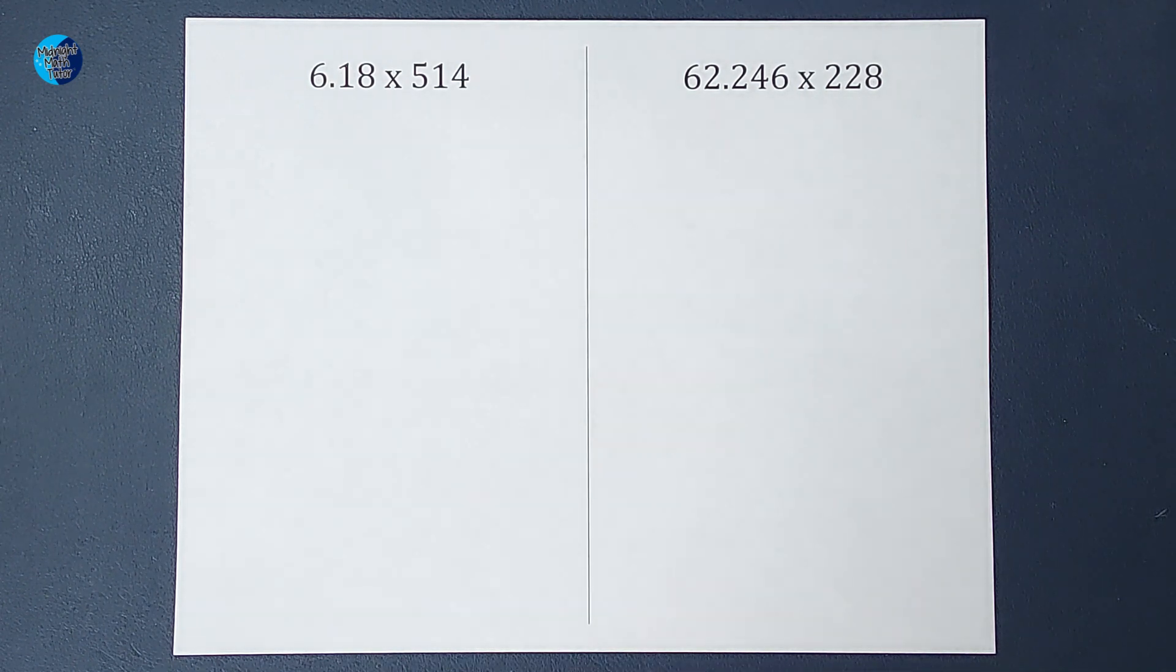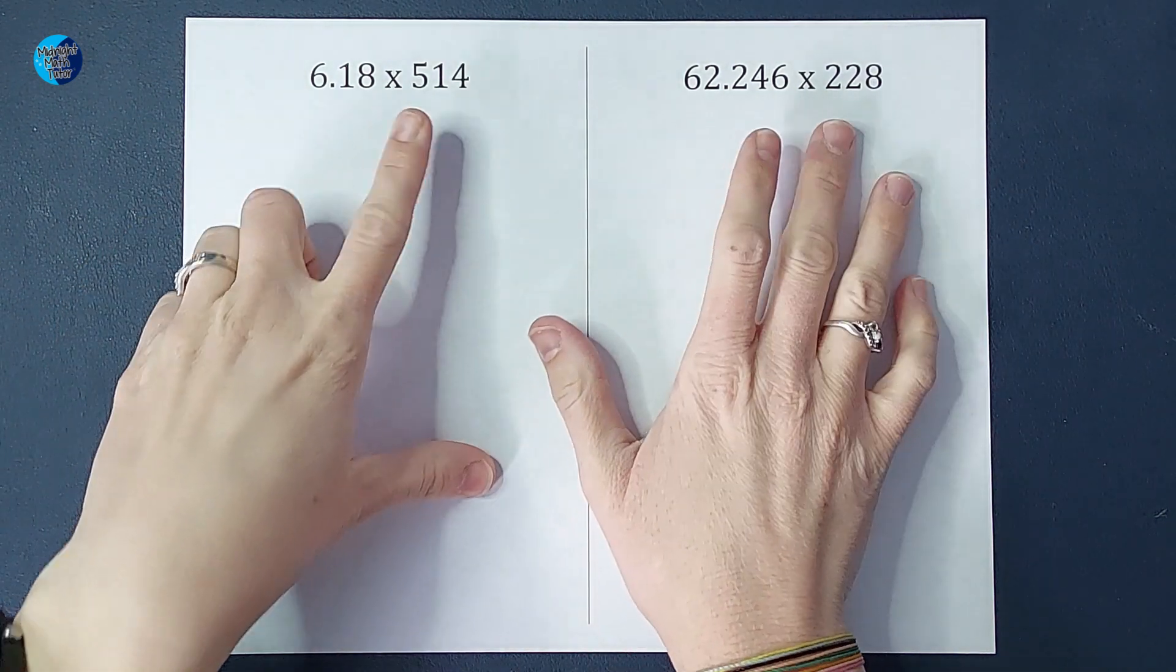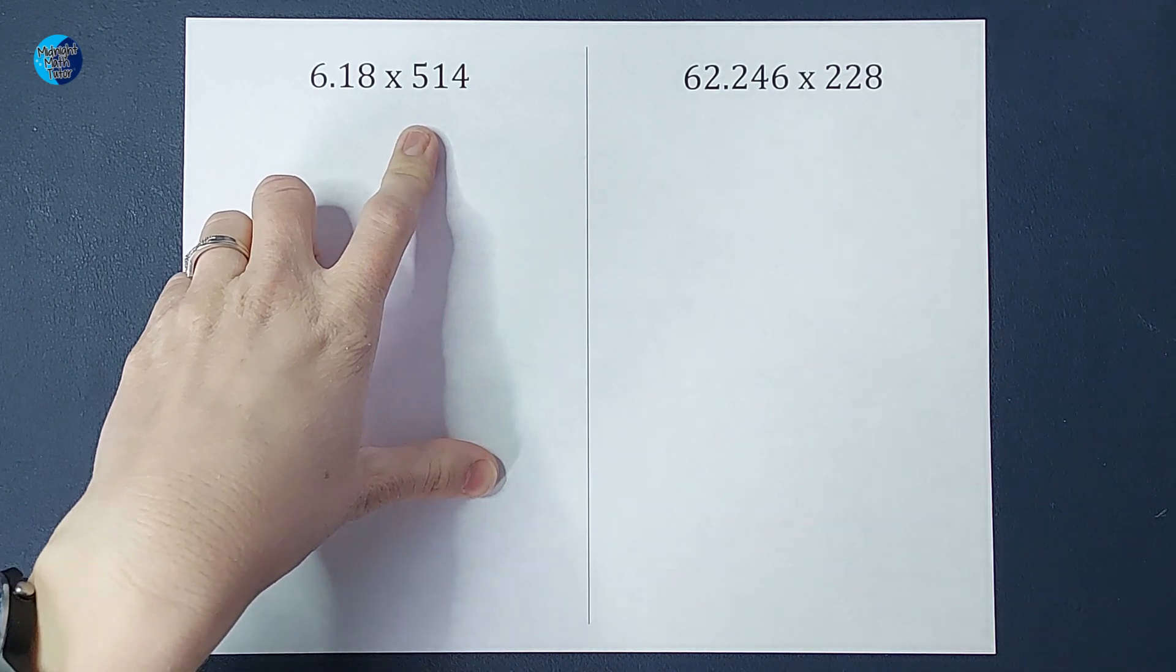Hey guys, we are going to do two examples where we multiply a decimal by a three-digit whole number.